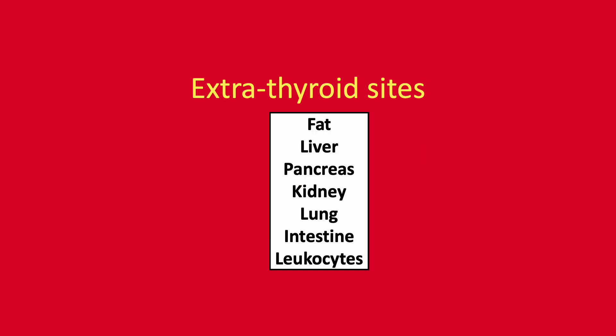However, procalcitonin can be produced in a range of non-thyroid sites, for example fat, liver, pancreas, kidneys, lung, intestine and leukocytes. However, in health, procalcitonin production from these extrathyroid sites is usually suppressed.